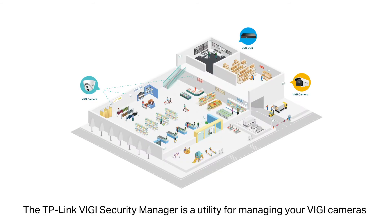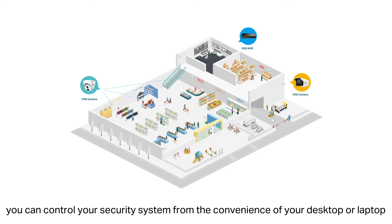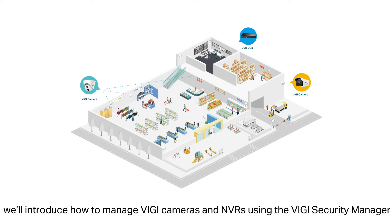The TP-Link Vigi Security Manager is a utility for managing your Vigi cameras and NVR centrally. With this utility, you can control your security system from the convenience of your desktop or laptop and have quick access to your video feeds. Today, we'll introduce how to manage Vigi cameras and NVRs using the Vigi Security Manager.